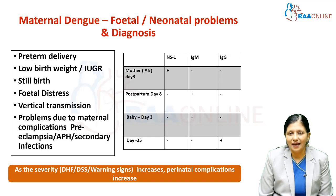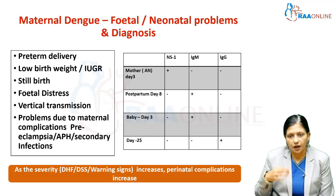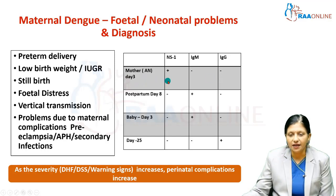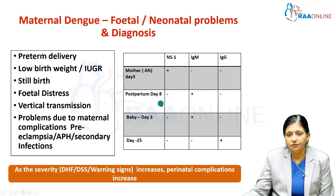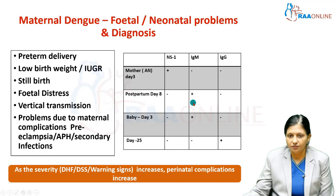To diagnose maternal dengue: NS1 antigen is usually positive in the first seven days of fever. Initially, IgG and IgM antibodies will not be positive — in the febrile phase, only NS1 antigen is positive. IgM and IgG antibodies usually become positive in the critical phase. If the patient has IgM antibody positive and NS1 antigen is negative and IgG is negative, that means she is in the recovery phase.